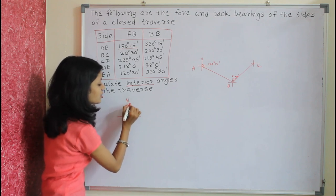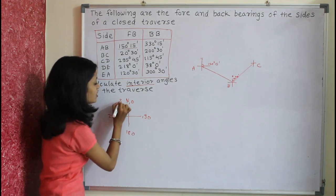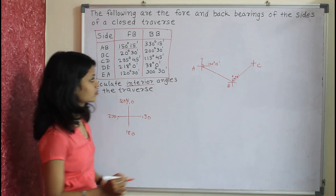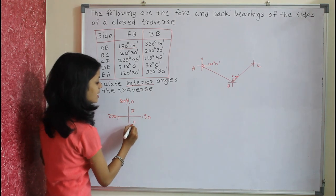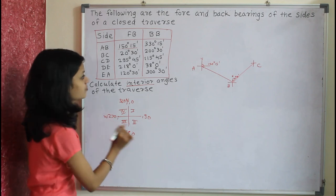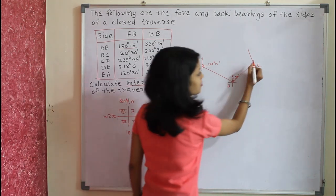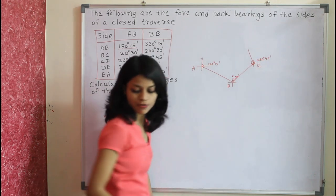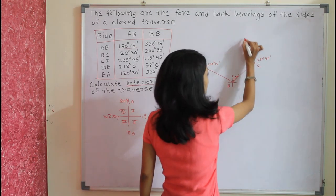From the north direction, bearings go 0°, 90°, 180°, 270°, and 360°. Therefore, 295°45' lies in the north-west (fourth) quadrant, measured 295°45' from north. This gives us line CD.